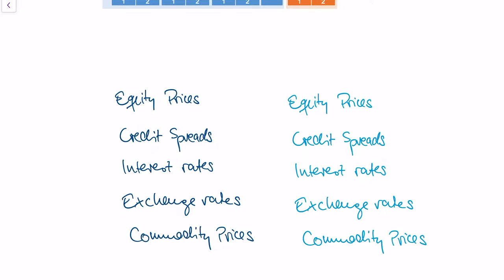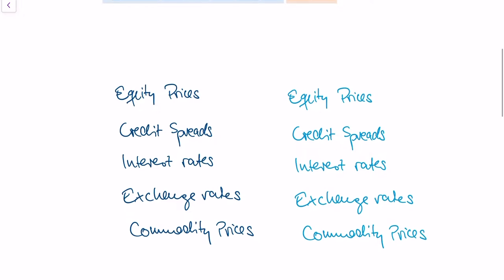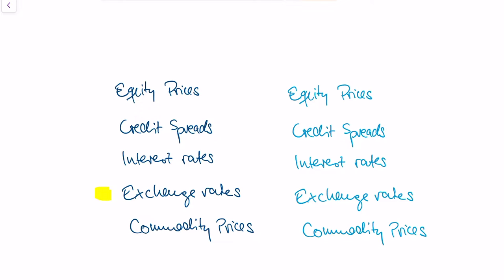Market risk is about what happens to our bank when market parameters change. These parameters include equity prices — for instance, if Apple's share goes from $100 to $105 — as well as credit spreads, interest rates set by the European Central Bank or the Fed, exchange rates between currencies like US dollars and euros, and commodity prices such as oil or gold.